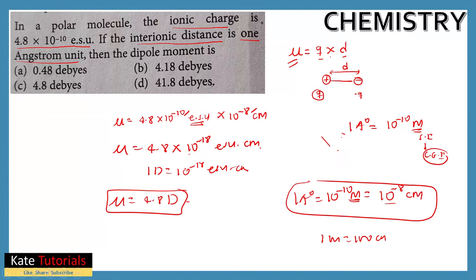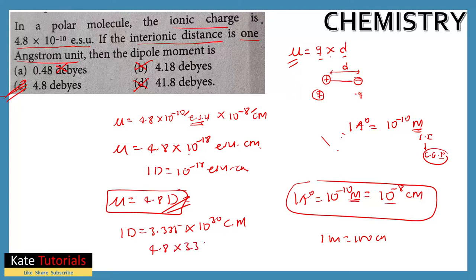The options are given in Debye, so the answer is 4.8 D — option C is correct. Not option D (which shows 41.8, that is wrong). If you want to convert to SI units, multiply 4.8 by 3.335×10⁻³⁰ coulomb-meter to get the answer in coulomb-meter — not centimeter, coulomb-meter is the SI unit. I hope this video has helped. Thank you.